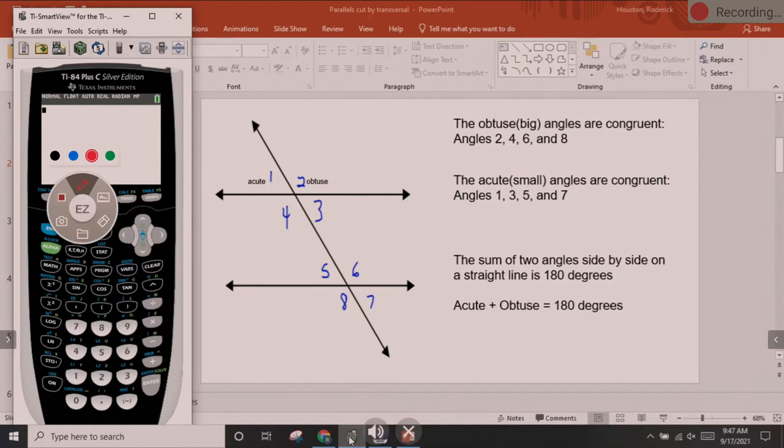We have obtuse angles which are obtuse angles open wide. The word obtuse just simply means big. Examples of obtuse angles are angle 2, angle 4. See how that opens wide, angle 6 opens wide, and angle 8. They open wider than 90 degrees, that's what obtuse is.